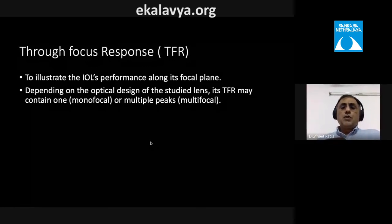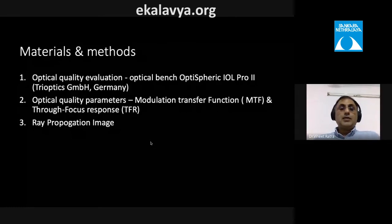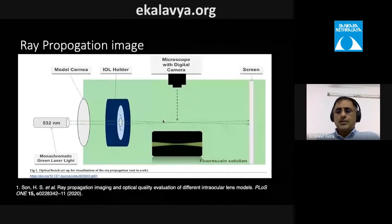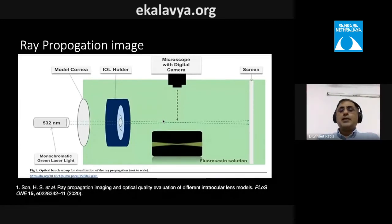The through-focus response (TFR) illustrates IOL performance along its focal plane, showing one, two, or three peaks for monofocal, bifocal, or trifocal lenses. Ray propagation imaging uses fluorescein solution with the lens in a holder, a model cornea, and monochromatic green light to visualize the focal distribution — useful to confirm whether a lens is truly unifocal or has multiple foci.